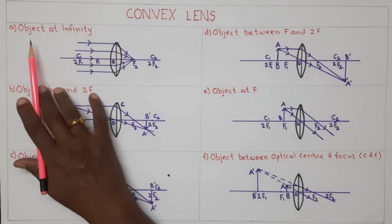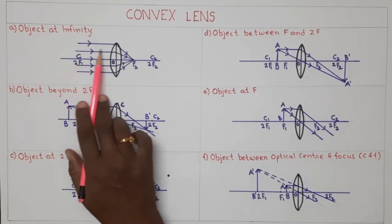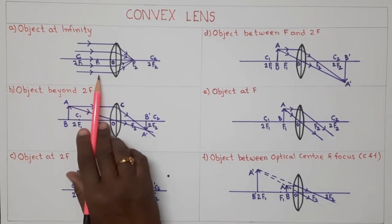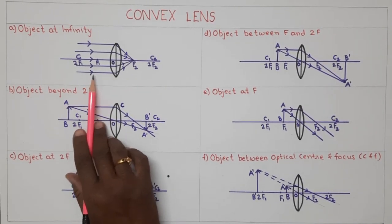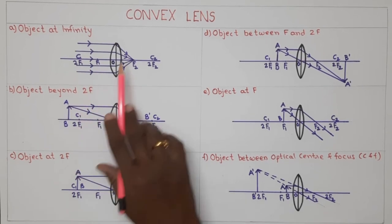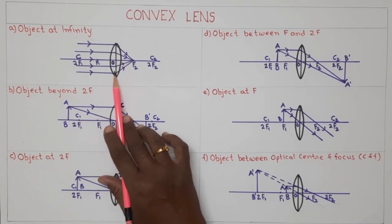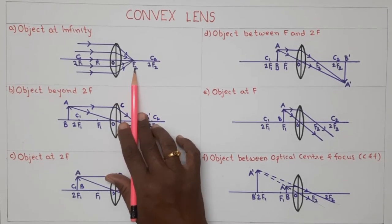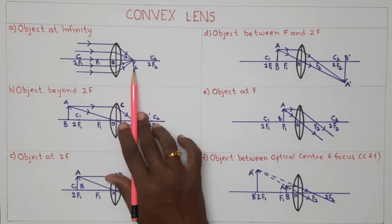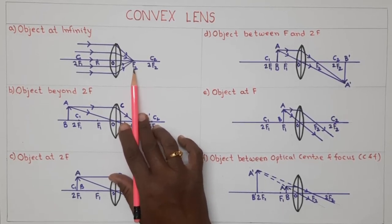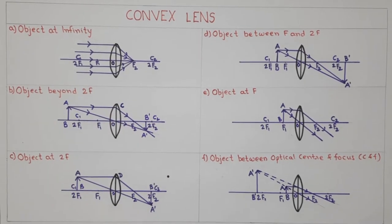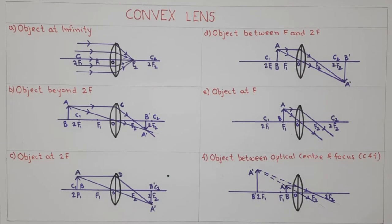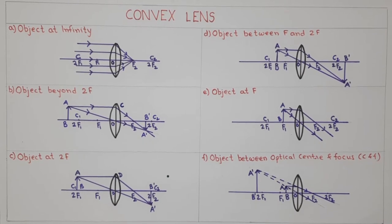First case: object at infinity. All rays coming from the object at infinity are parallel to the principal axis. After refraction from the lens, they pass through the principal focus on the other side. So the image formed at the focus of the lens is real, inverted, and diminished — point sized. The practical application: in a telescope, the objective lens is a convex lens which forms a real, inverted, and diminished image of the distant object at the focus.